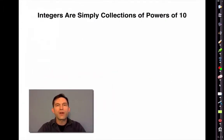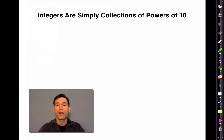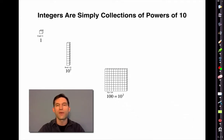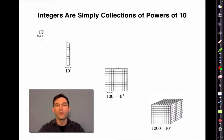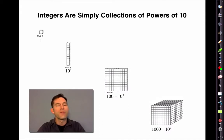Now, we start a discussion about polynomials — believe it or not — with discussing integers. Integers are simply collections of powers of 10. We have one unit, then we collect 10 of those and we have 10 units, collect 10 of those we have 100 units, collect 10 of those we have 1,000 units. So we have 10 to the first — that's 10 — 10 to the second is 100, 10 to the third is 1,000, 10 to the fourth would be 10,000, 10 to the fifth would be 100,000, and so on.